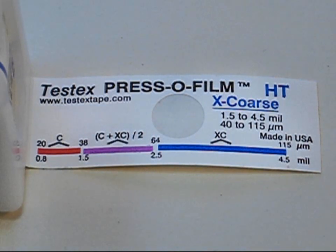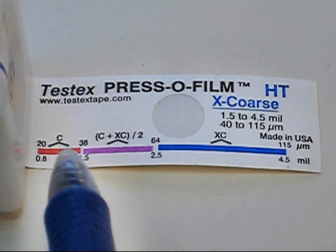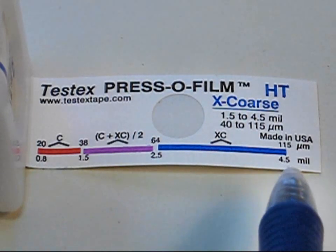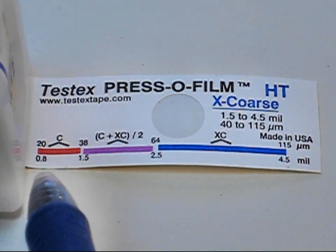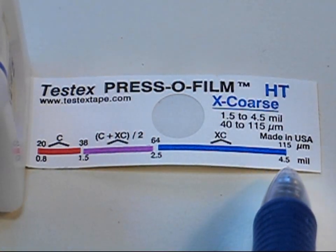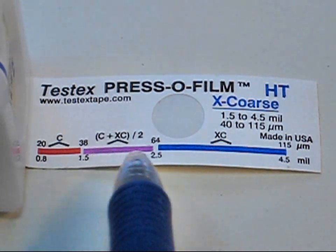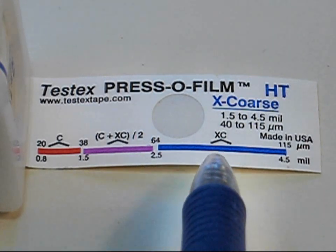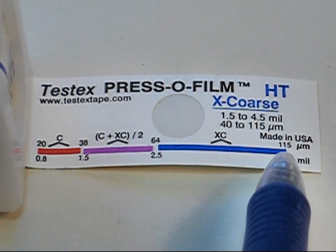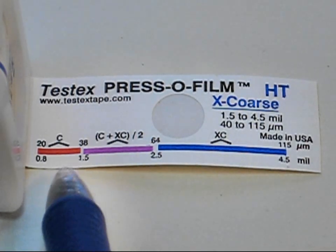Here is where it is helpful to refer to the figure on each piece of tape. If the measurement you just took is within replica tape's measurement range of 0.8 to 4.5 mils, or 20 to 115 micrometers, but outside the overlap region between coarse and x-course grades, you are done. Take the reading you just obtained and record it.